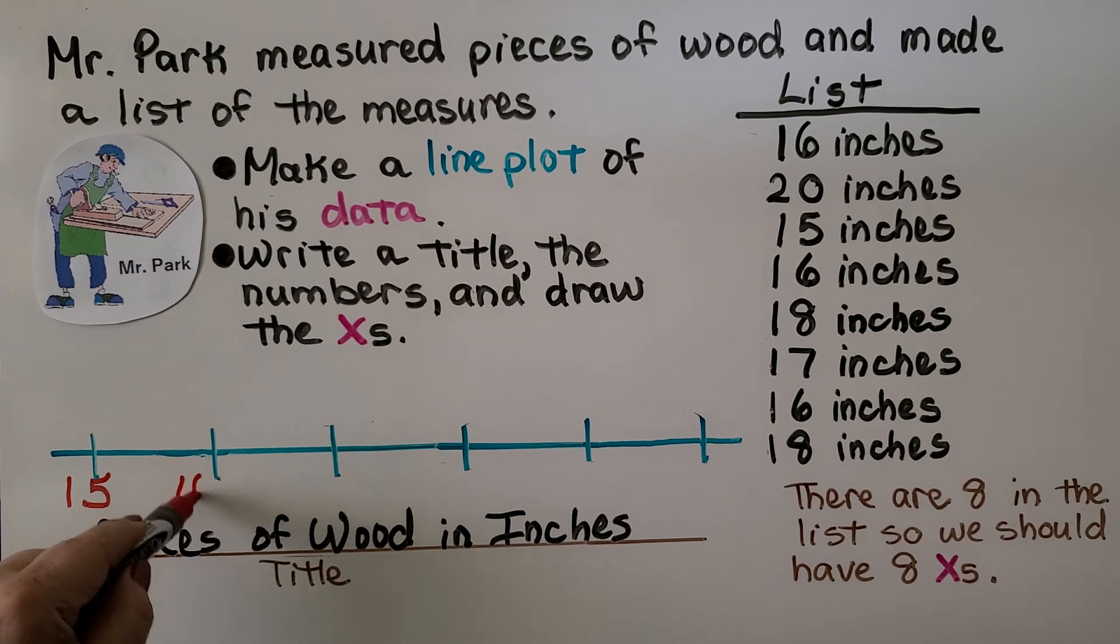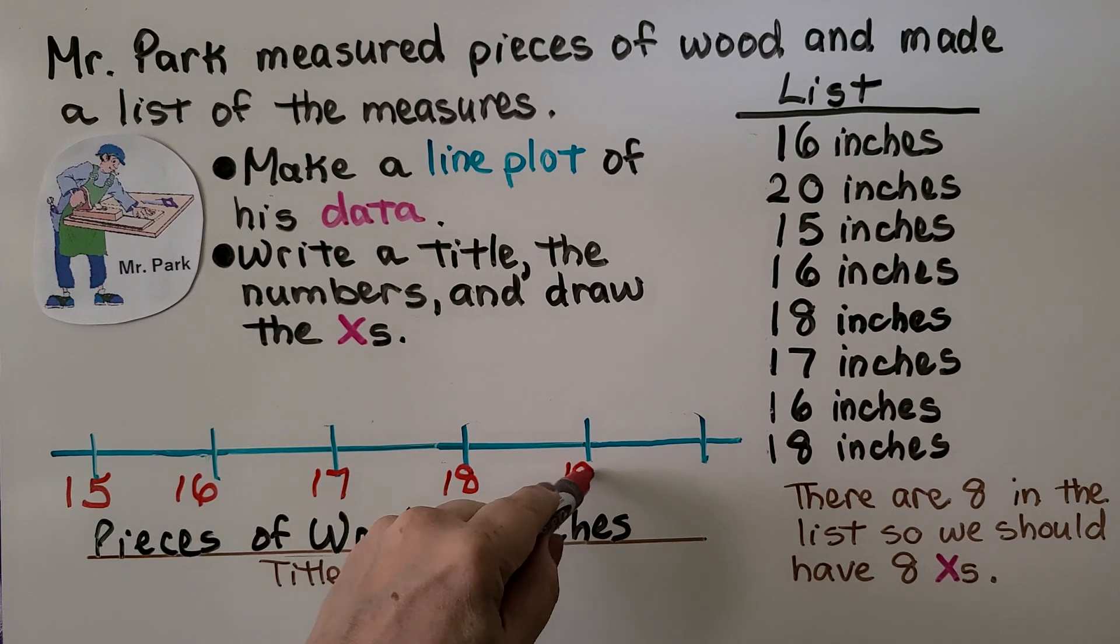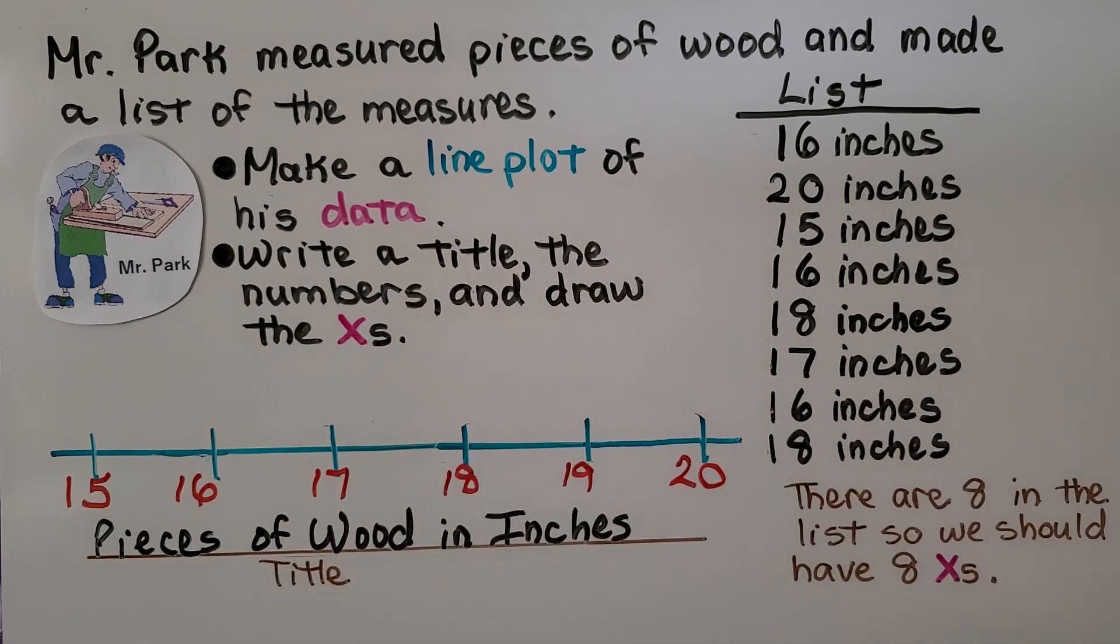Then we would have 16, 17, 18, 19, 20. And we're going to stop at 20 because that's the greatest number in the list.